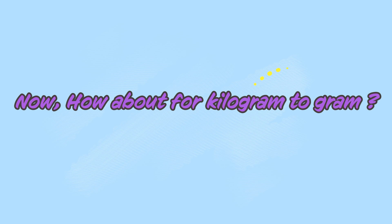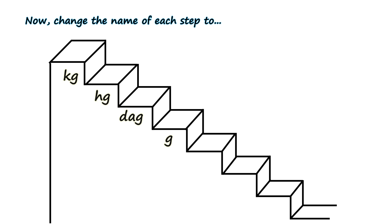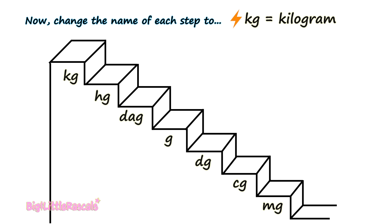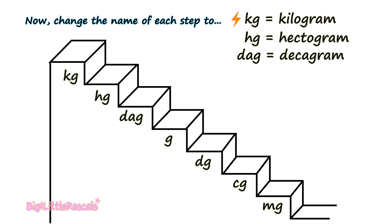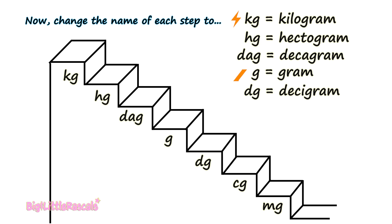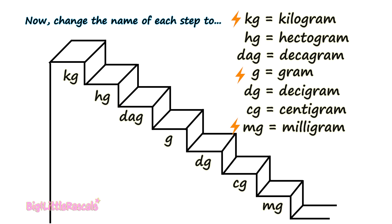Now, how about kilogram to gram, or gram to kilogram? First, let's visit back our stairs of measurement. Let's change the name of each step: KG short form for kilogram, HG short for hectogram, DAG short for decagram, G for gram, DG for decigram, CG for centigram, and the last one, Mg for milligram. In this stair, KG is the biggest unit of measurement, while Mg at the bottom is the smallest. The most commonly used are kilogram, gram, and milligram. I have put a flash sign in front of them and you don't really have to worry about the rest.